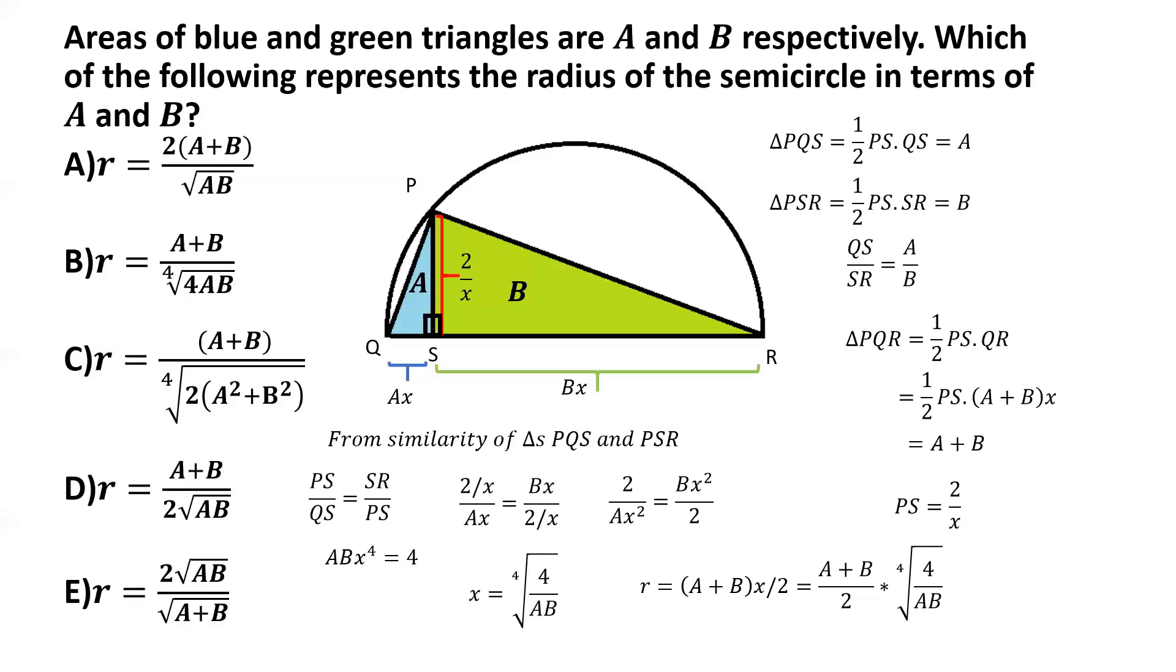And this is what it comes to. And now we can simplify further. And we can show that this is equivalent to A plus B divided by the fourth root of 4 times AB. So the correct choice in this case will be option B.